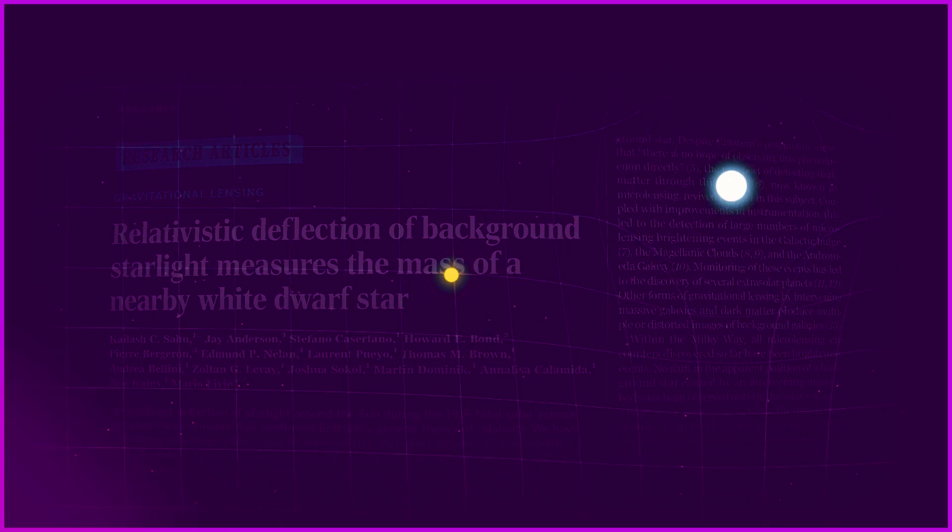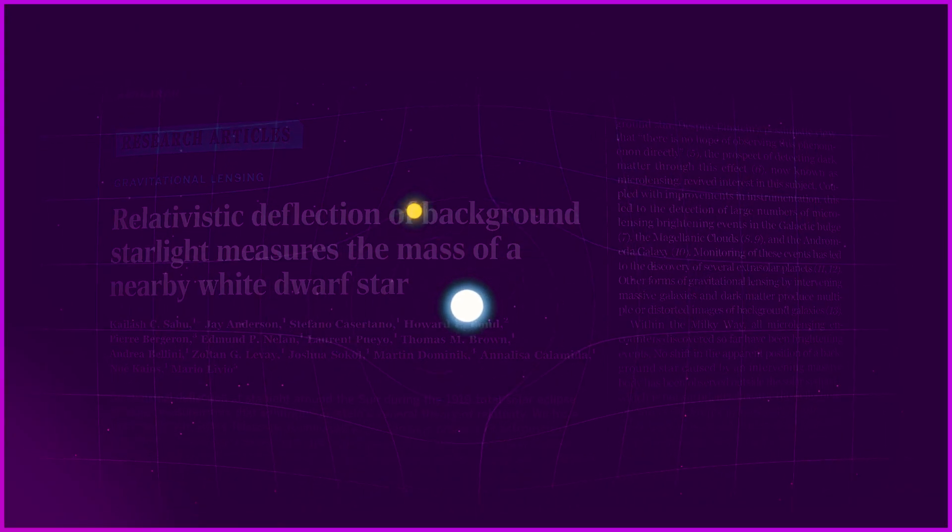For the first time ever, astronomers have seen a distant star warp the light of another star, making it seem as though it changed its position in the sky.